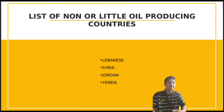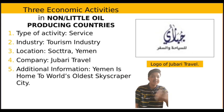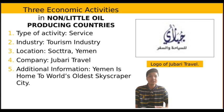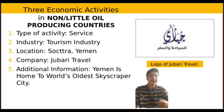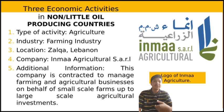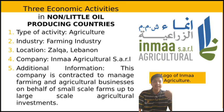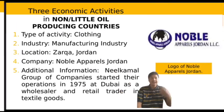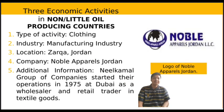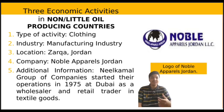For the non-oil or little oil-producing countries such as Lebanon, Yemen, Syria, and Jordan, the first activity falls under the tourism industry, located in Yemen and managed by Jubari Travel. Next is farming activity under the agriculture industry, held in Zarqa, Lebanon, managed by Inma Agriculture SARL. The last is clothing activity under the manufacturing industry, held in Zarqa, Jordan, managed by Noble Appearance Jordan.